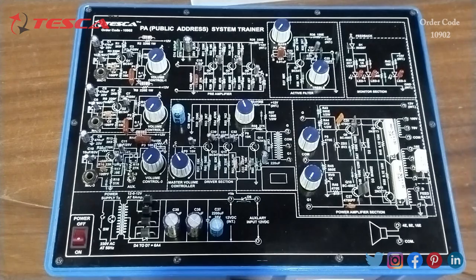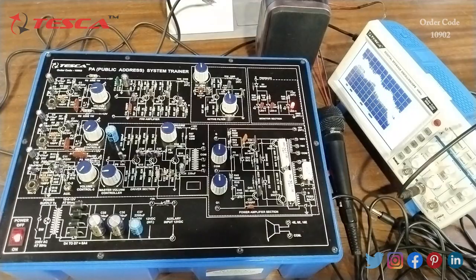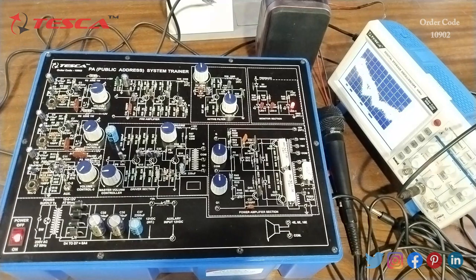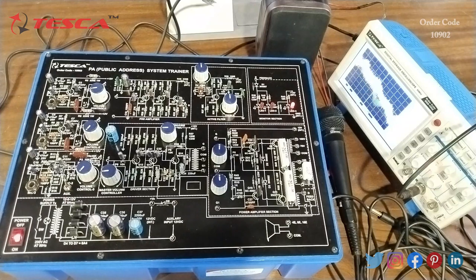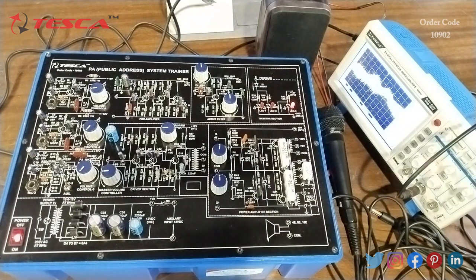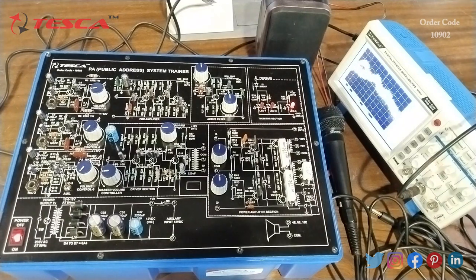Now we will start the experiment to study the circuit and operation of a PA system and observe various intermediate waveforms. We will start the procedure step by step. First of all I will connect the kit to the AC supply, then we will make the connections one by one.